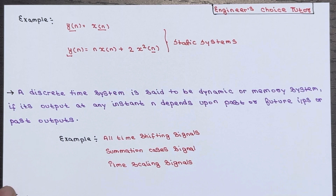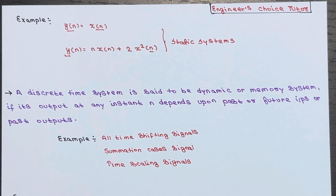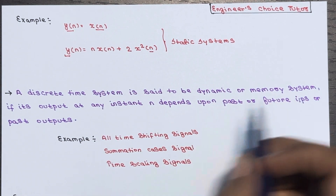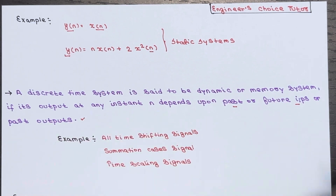On the other hand, dynamic systems, also called memory systems, are a bit more complex. Unlike their static counterparts, these systems take into account past and future inputs as well as past outputs when determining the output at any given instant. In simple words, a discrete time system is said to be dynamic if its output at any instant n depends upon past or future inputs or past outputs. They are like the time travelers of the system world, constantly looking back and forth to make sense of things.